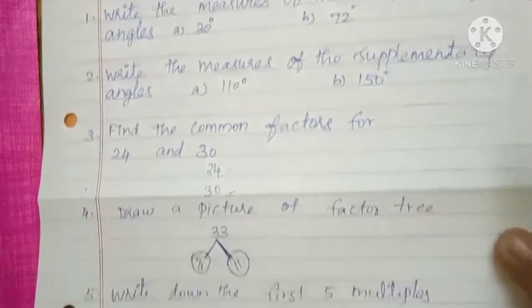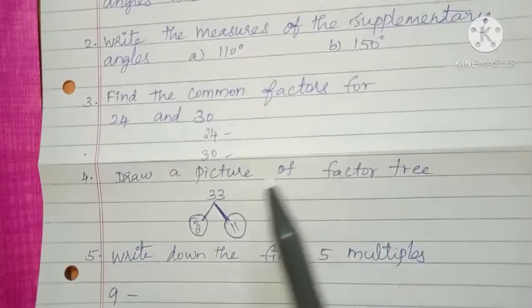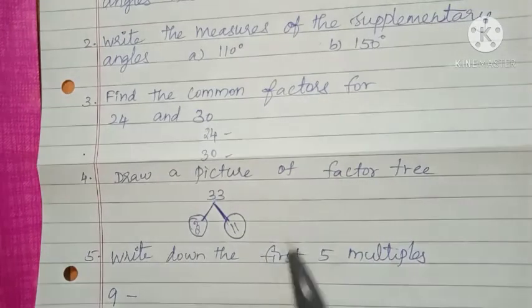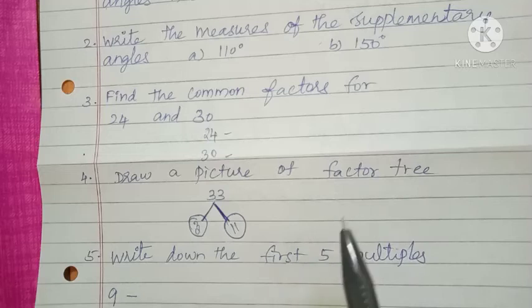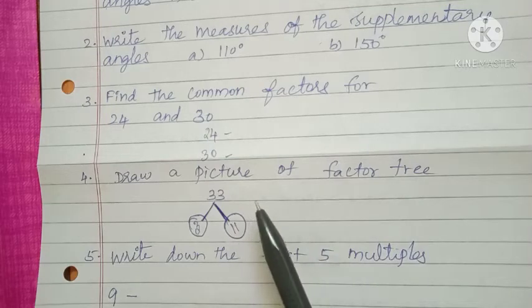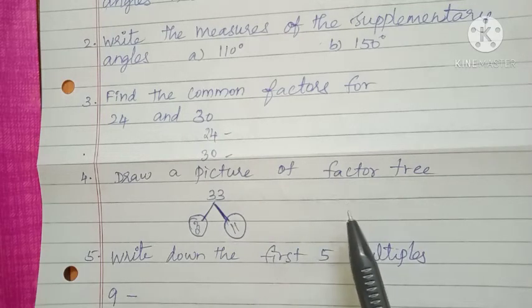Then next one, find the common factors for 24 and 30. Find out the factors, write the number, and find out the answer. Then fourth one, draw the picture of the factor tree for 32.